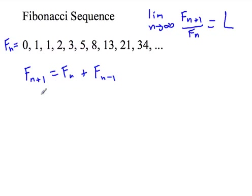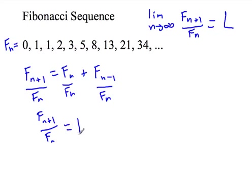So what we're going to do here is divide everything by F sub n. And what do we get? Well, this simplifies to 1. So we have F sub n plus 1 out of F sub n equals 1 plus F sub n minus 1 out of F sub n.